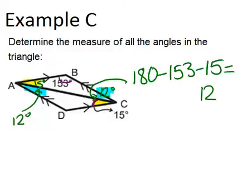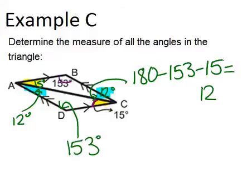Now we have a situation where we can use the third angle theorem. We have two pairs of angles between the two triangles that are congruent: a 15 and a 15, and a 12 and a 12. So the third pair of angles must also be congruent, meaning the missing angle D has to be 153 degrees because it must be congruent to angle B.